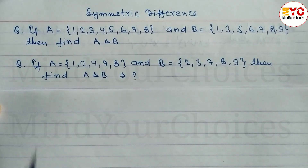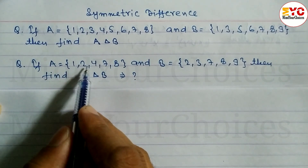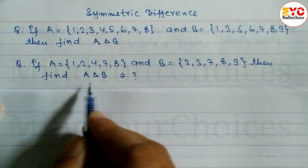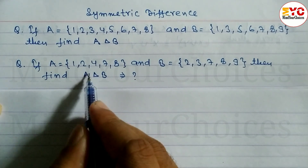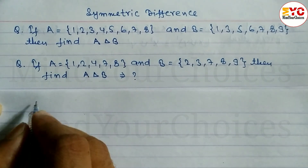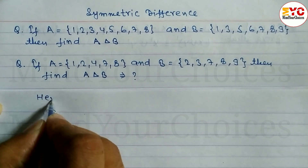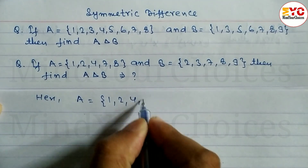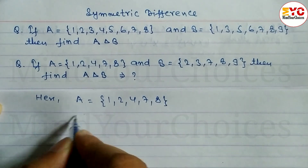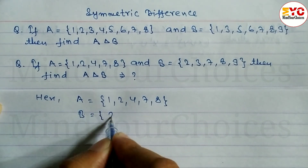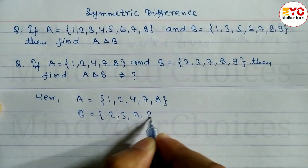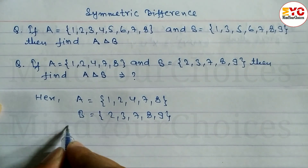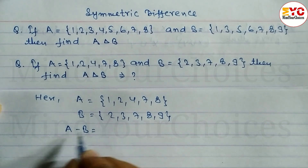Look at the next question. Here we have set A = {1, 2, 4, 7, 8} and B = {2, 3, 7, 8, 9}. Find A symmetric difference B. This is the sign of symmetric difference. So set A = {1, 2, 4, 7, 8} and set B = {2, 3, 7, 8, 9}. To find out the symmetric difference we have to find out A minus B and B minus A.